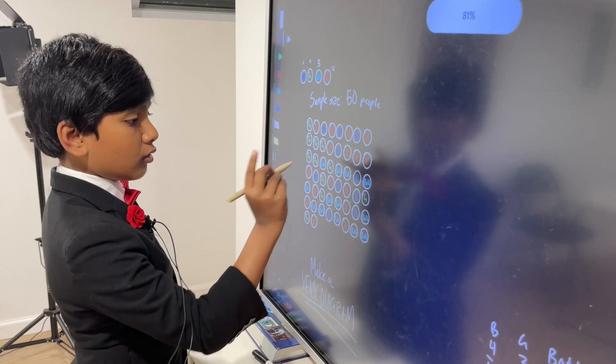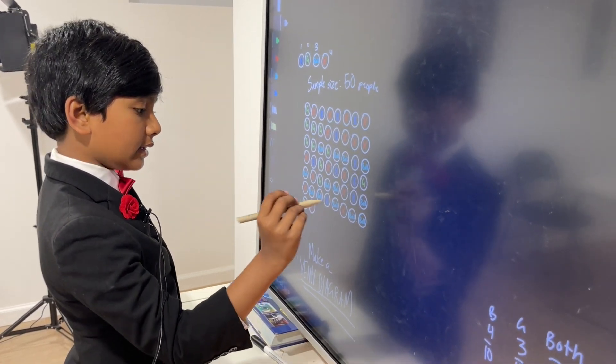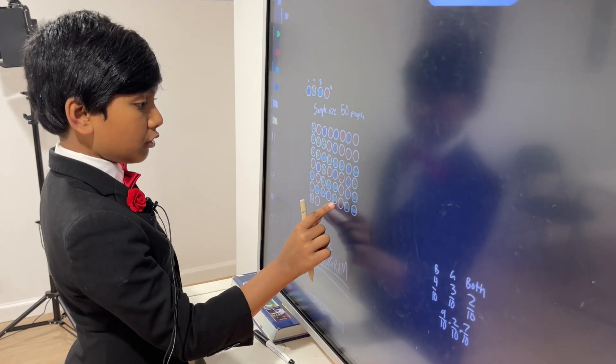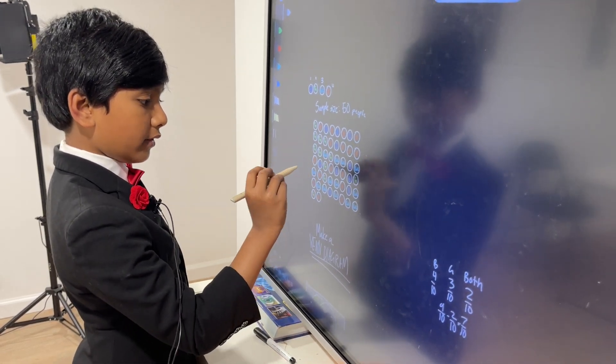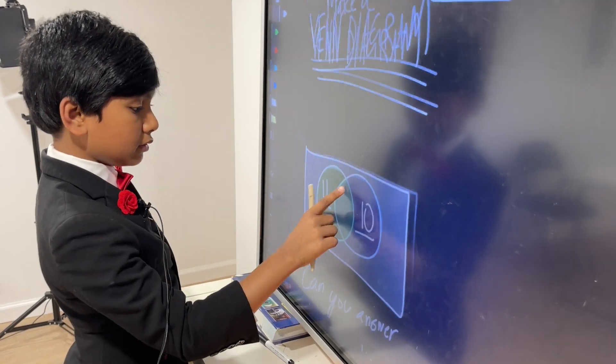There are one, two, three, four, five, six, seven, eight, nine, ten, eleven, twelve, thirteen. Or, did I miss count? One, two, three, four, five, six, seven, eight, nine, ten, eleven, twelve, thirteen people who like both.